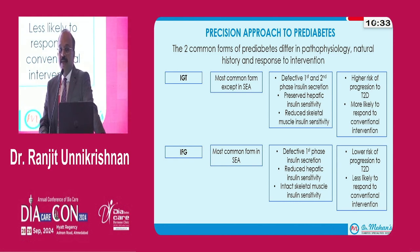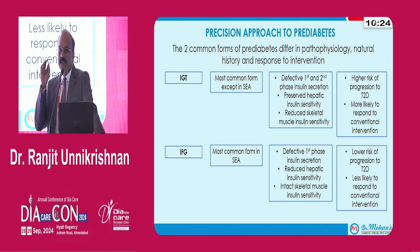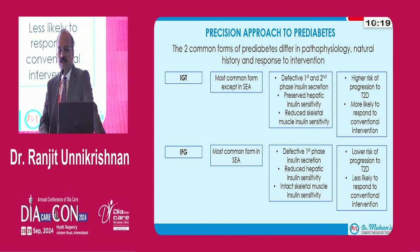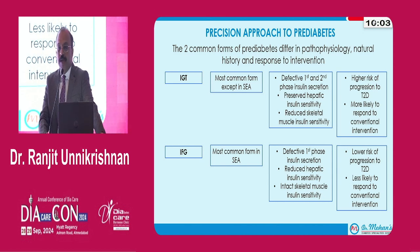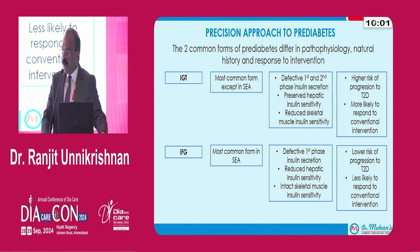IFG, on the other hand, is the most common form in India — our prevalence of IFG is maybe two or three times higher than that of IGT. Here the main defect is in insulin sensitivity in the liver; skeletal muscle sensitivity is not affected, and the first phase insulin secretion is more affected than the second phase. The risk of progressing to diabetes is slightly lower than that of IGT, but unfortunately most of the drugs and lifestyle interventions we try for pre-diabetes have not been shown to be useful in IFG.